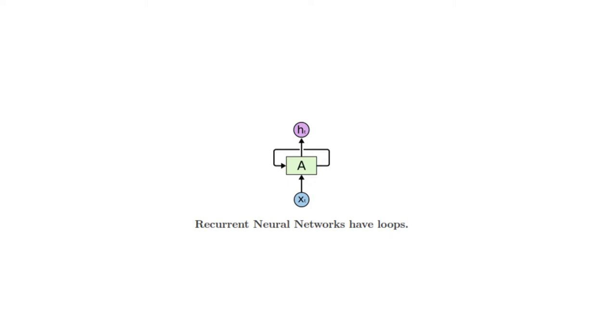Traditional neural networks can't do this, and it seems like a major shortcoming. For example, if you want to classify what kind of event is happening at every point in a movie, it's unclear how a traditional neural network could use its reasoning about previous events in the film to inform later ones.